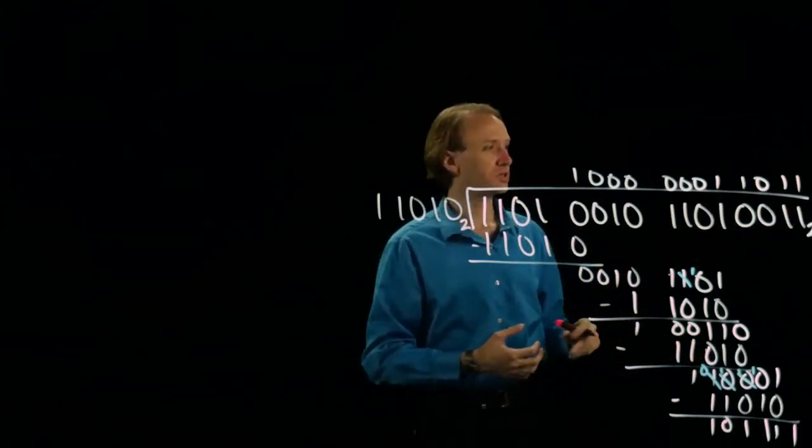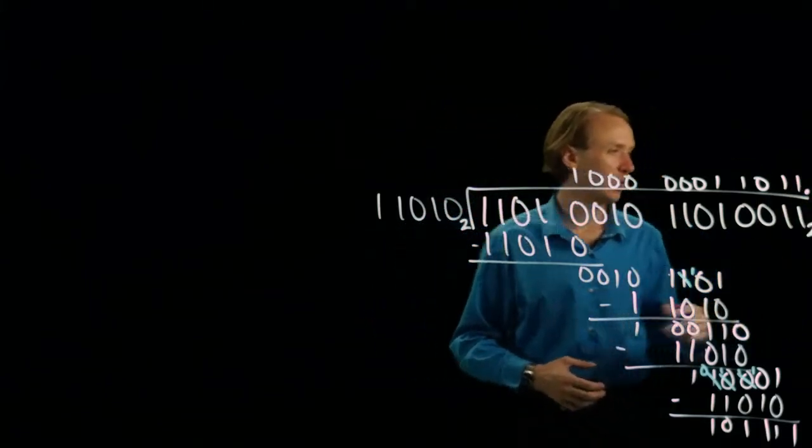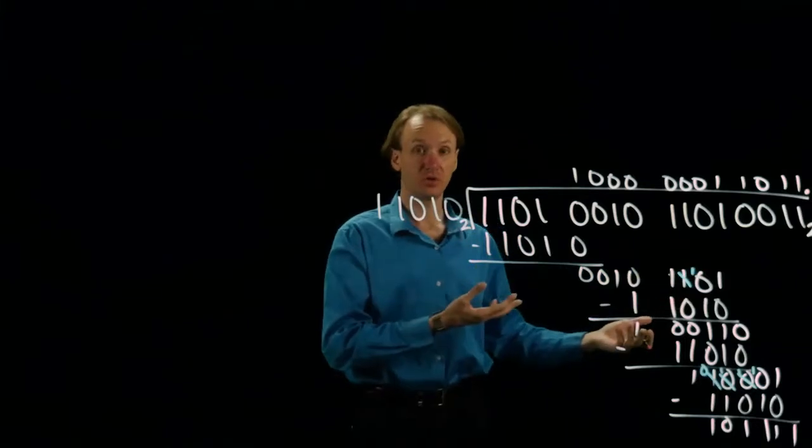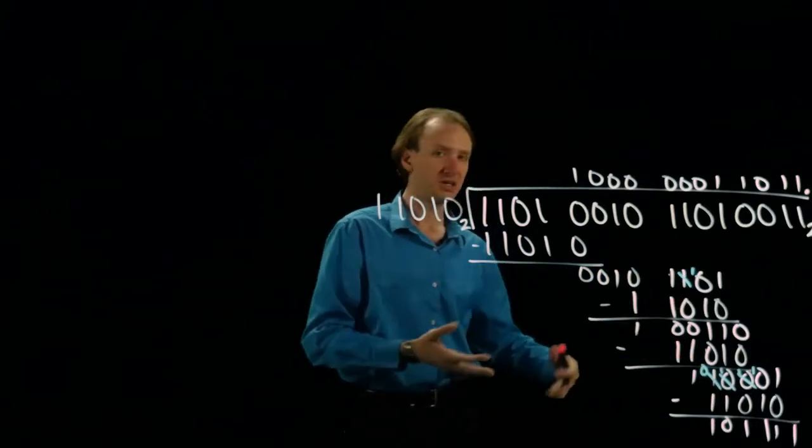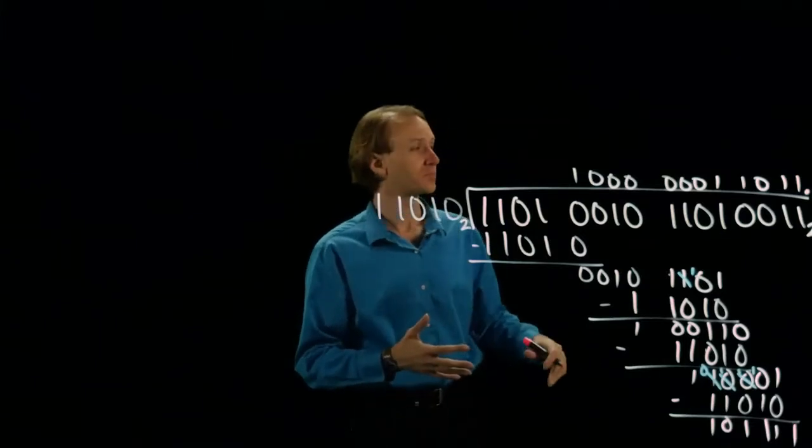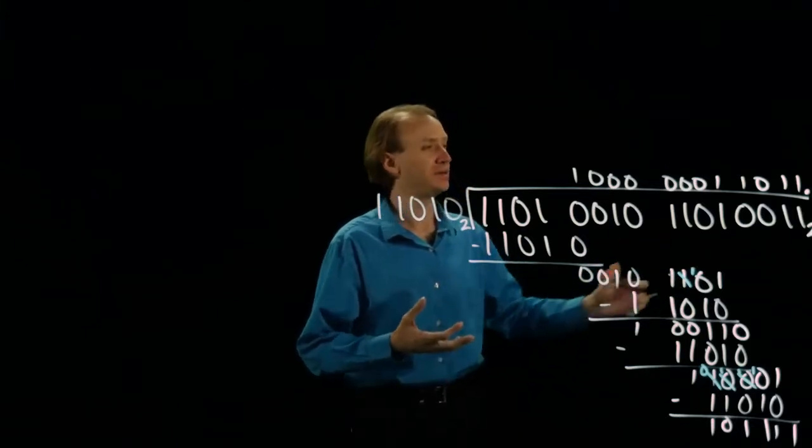I could continue doing this, just adding in a binary point and continuing to pull down zeros as long as I'd like. In this case, I've run out of space, so I think I'll stop here. But this number would have several floating point bits behind it.